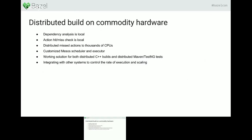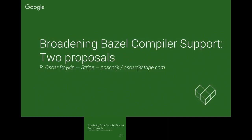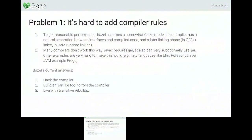Our last talk is by Oscar Boykin, who's going to talk about two proposals to improve Bazel. Does anyone here use a programming language you really like that isn't currently supported by Bazel? So a couple of people — maybe you like Haskell, Erlang, or something similar. If you go to try to implement rules for Bazel, I worked on this with Scala, and you find it's pretty painful. I'm going to talk about two things I think would really help.